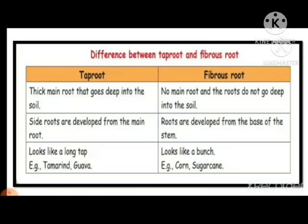All this you can refer to in your textbook pages 58 and 59. Functions of root and the warm-up exercise are also there — you have to do that. Read about taproot and fibrous root; take your book and read line by line, then only you can understand. To recap: taproot has a thick main root that goes deeply into the soil; fibrous root does not have a thick root and does not go deep. Side roots develop in taproot, but here roots develop from the base of the stem, not from a main root.